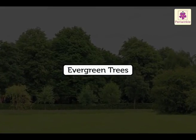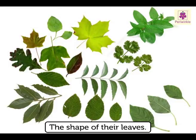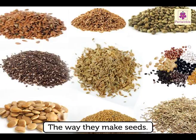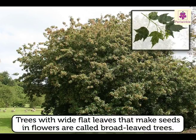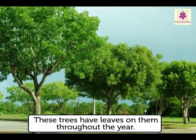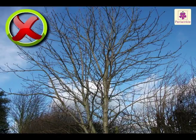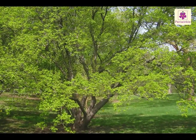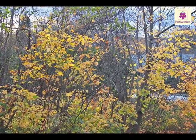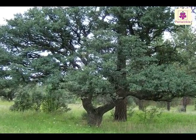Evergreen trees can be divided into two groups by the shape of their leaves and the way they make seeds. Trees with wide, flat leaves that make seeds in flowers are called broad-leaved trees. These trees have leaves on them throughout the year — their branches are never bare. They are called evergreens because they are green throughout the year. They shed their leaves, but new leaves grow soon to replace the dead ones, dropping leaves in ones and twos throughout the year.